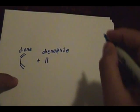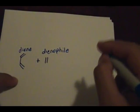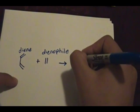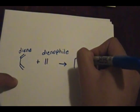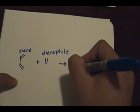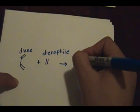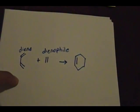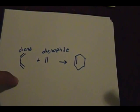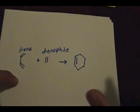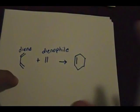These two react to form a six-membered cyclohexene ring. The mechanism is very straightforward with no twists and turns, and it applies to every different variation of the Diels-Alder reaction.